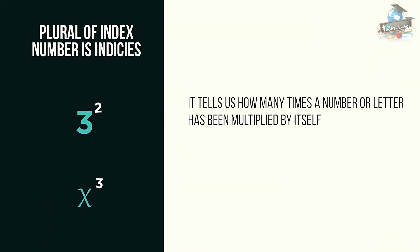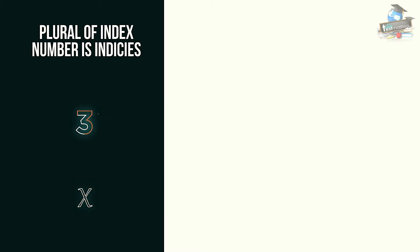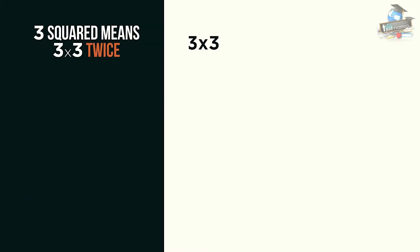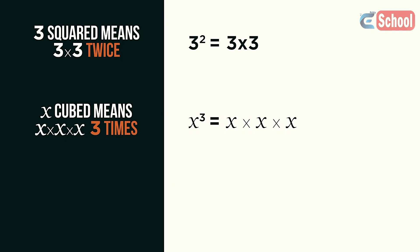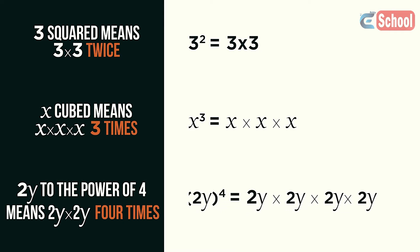It just tells us how many times a number or letter has been multiplied by itself. So 3 squared means 3 multiplied by 3 twice. x cubed means x multiplied by x multiplied by x so 3 times. And 2y to the power of 4 means 2y multiplied by 2y 4 times.